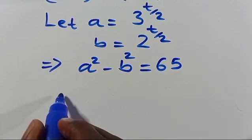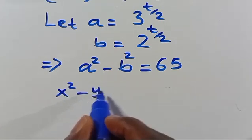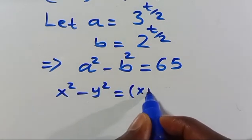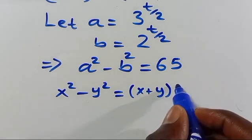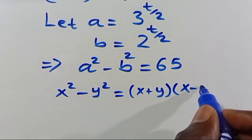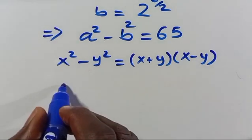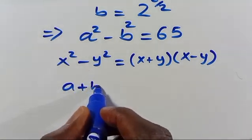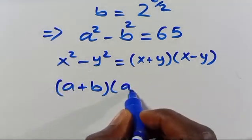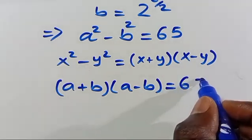Let us recall that when we have x squared minus y squared from the algebraic expression, this equals x plus y multiplied by x minus y. Making the comparison with our expression, we are going to have a plus b in parenthesis multiplied by a minus b in parenthesis equals 65.